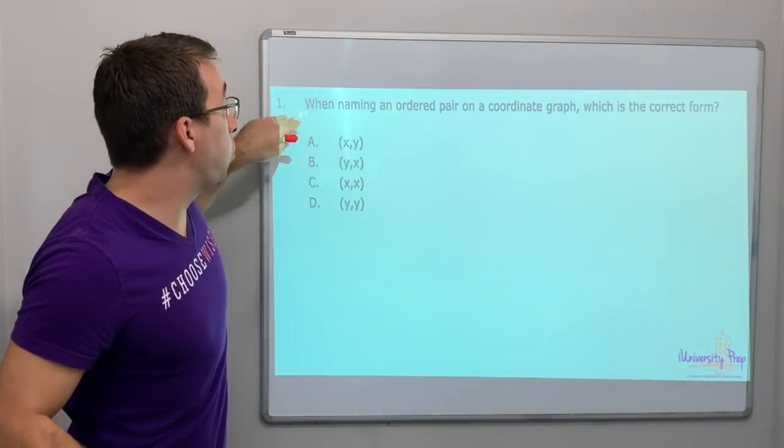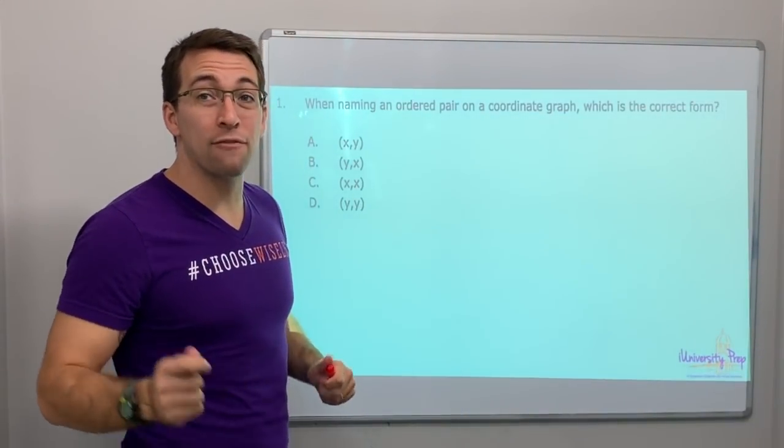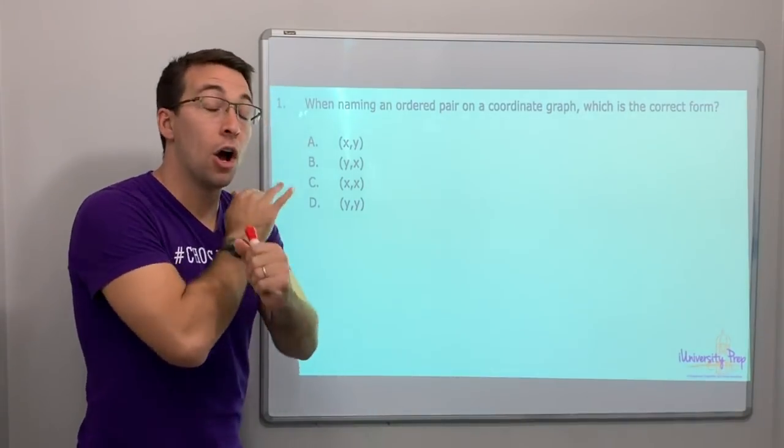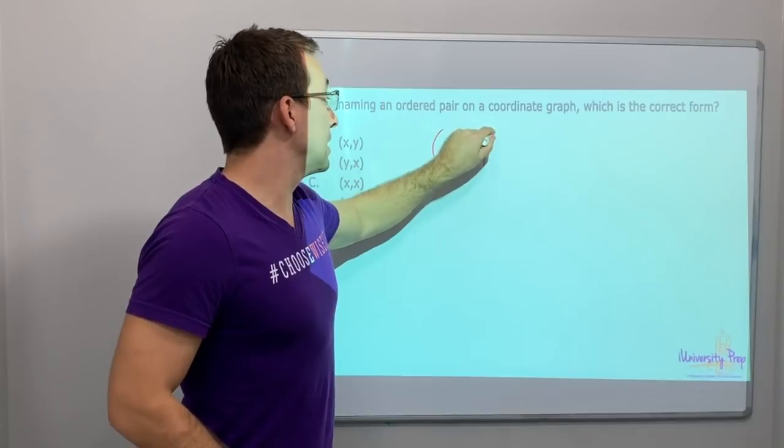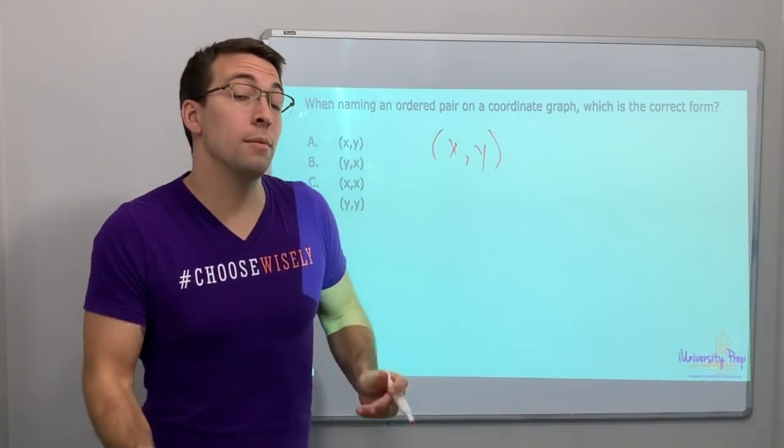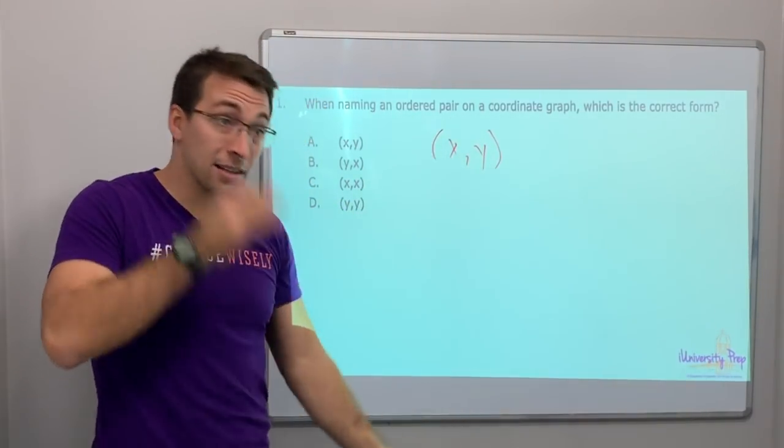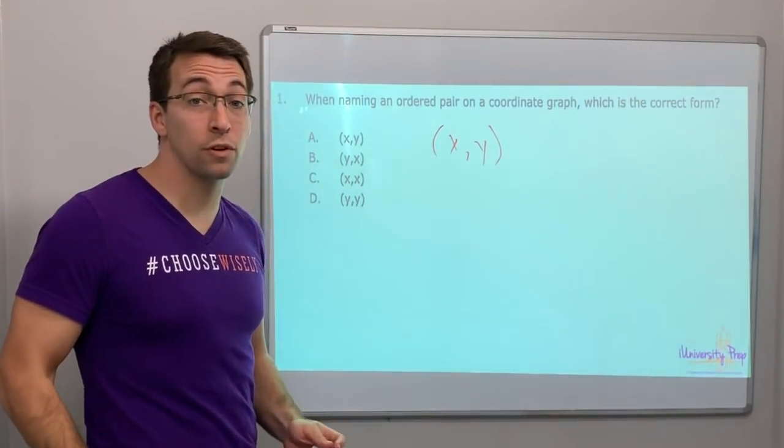So when naming an ordered pair on the coordinate graph, which is the correct form? Always, guys, X, Y. What comes first in the alphabet? X, Y, Z. X always comes first.